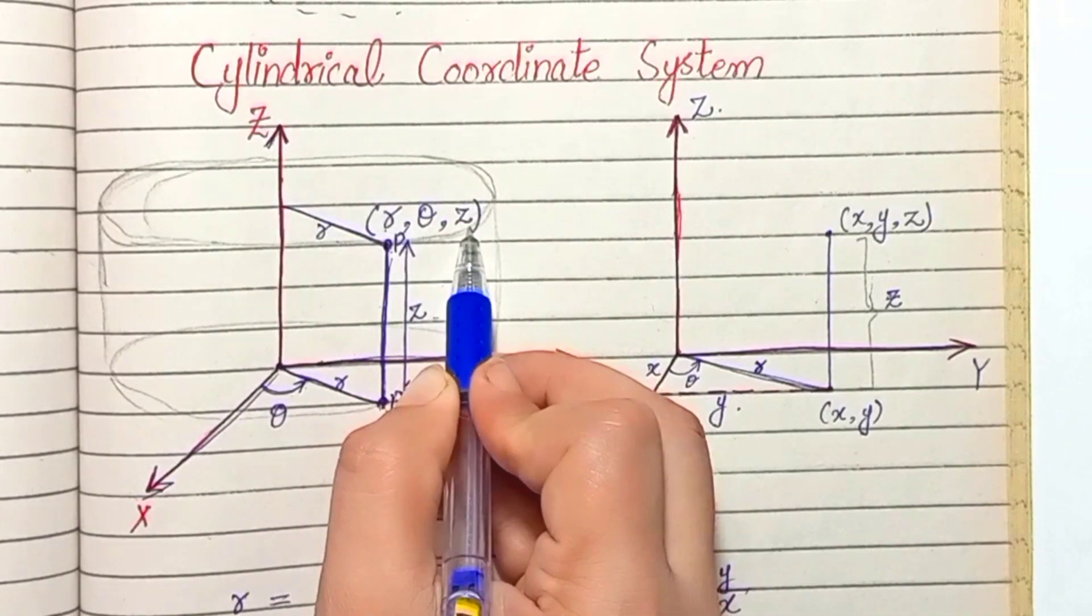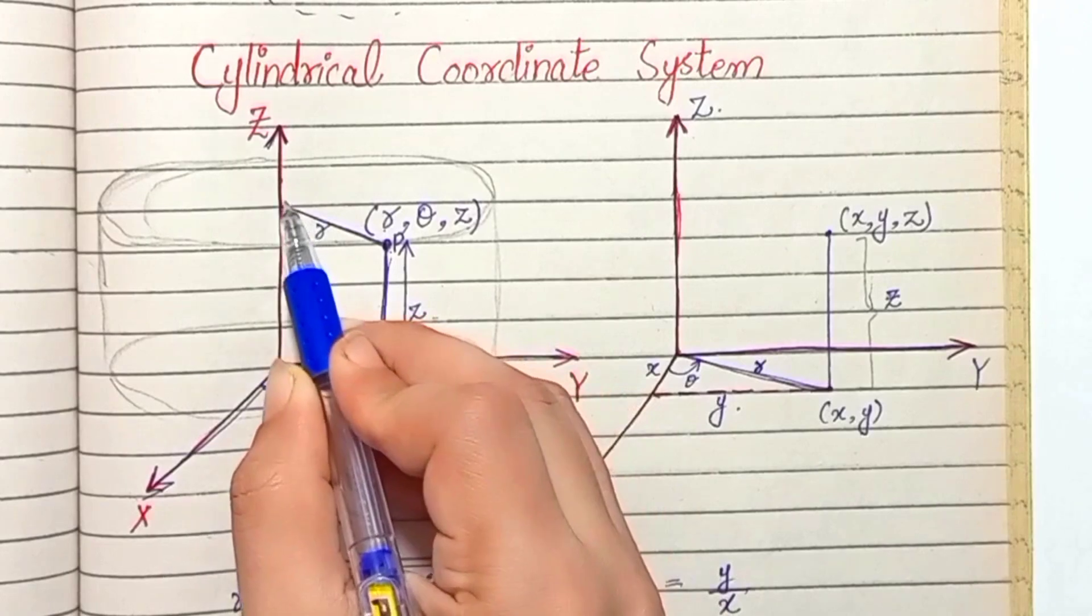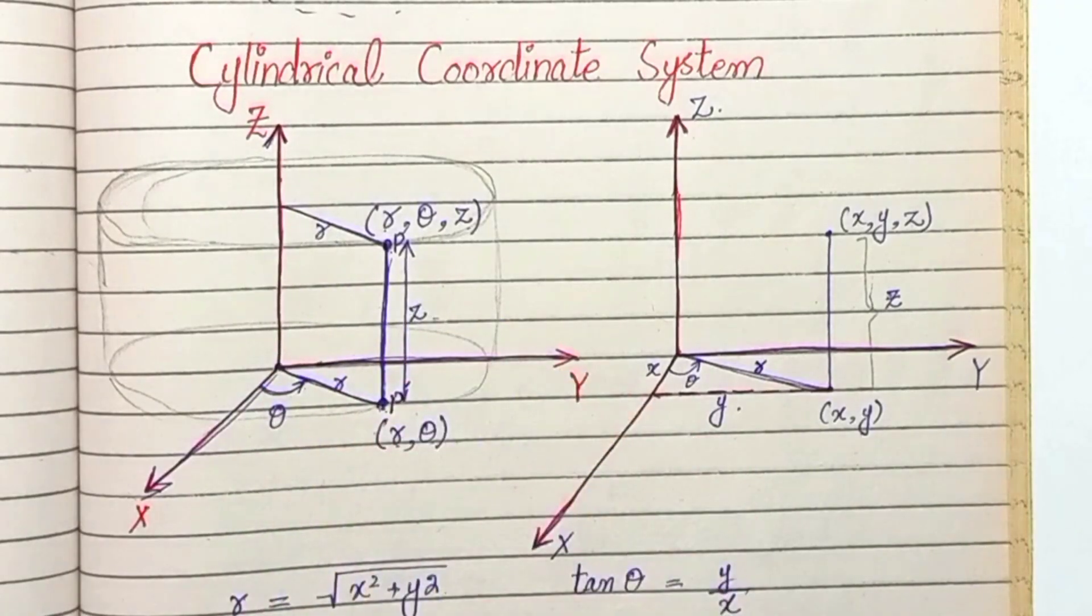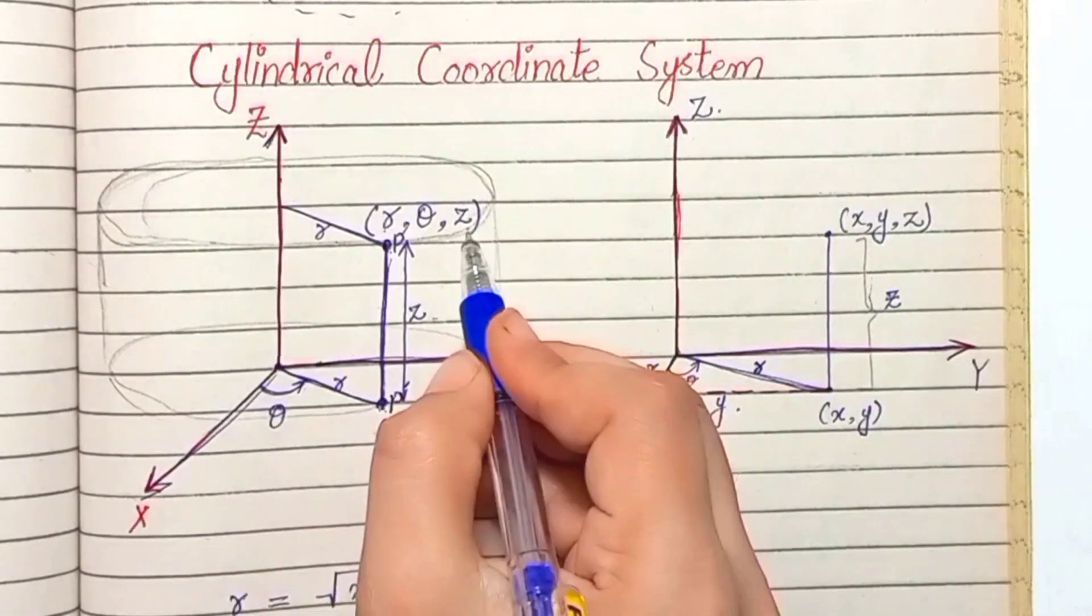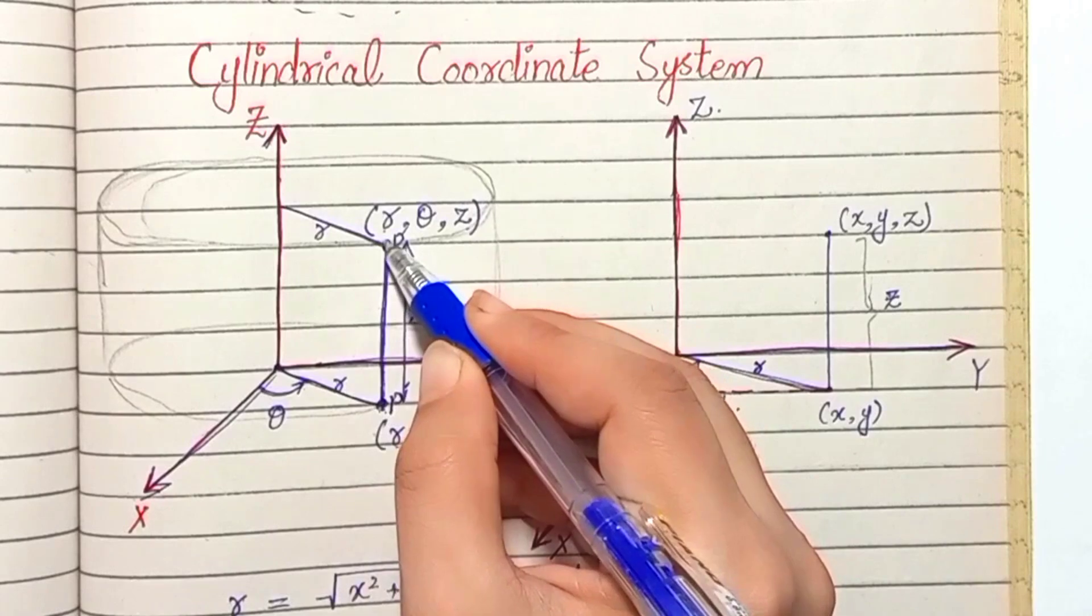in terms of r, theta, and z. r is the distance of this point from the z-axis, theta is the angle, and z is the distance of this point from the origin.